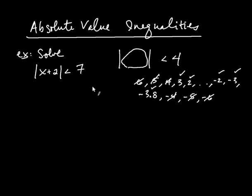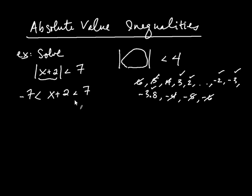That same logic applies here. Whatever is between the absolute value signs has to be less than 7 and greater than negative 7. So we write that down: x plus 2 has to be less than 7, and at the same time greater than negative 7. This really suggests correctly that x plus 2 is between negative 7 and 7. Once you have it at this stage, it's a compound inequality and we know how to solve these.